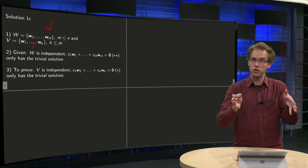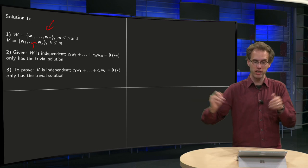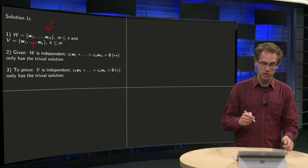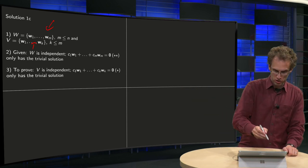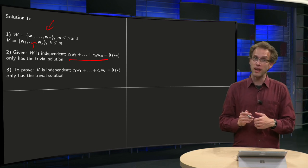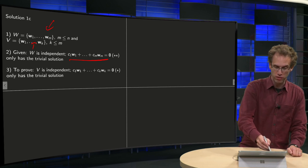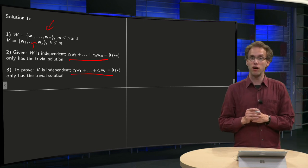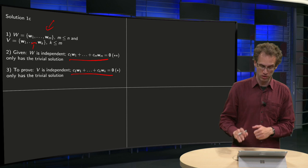or they are just the first k vectors of your bigger set. Now, it's given that W is independent, so you know that this equation over here only is a trivial solution, and then we have to prove that V is independent, so we have to prove that this equation over here only is a trivial solution. Now,